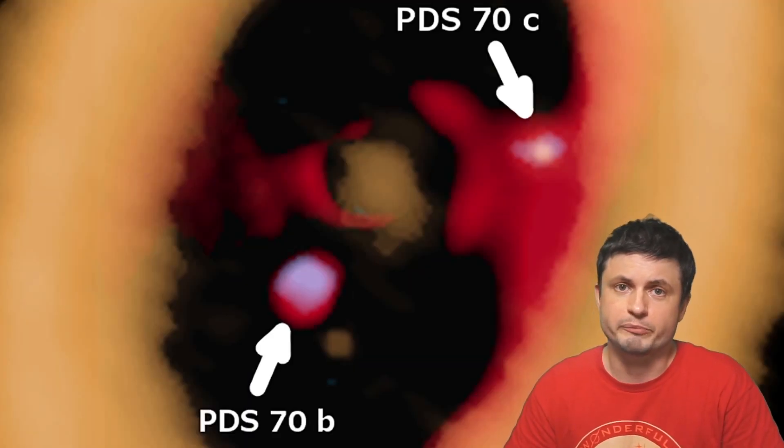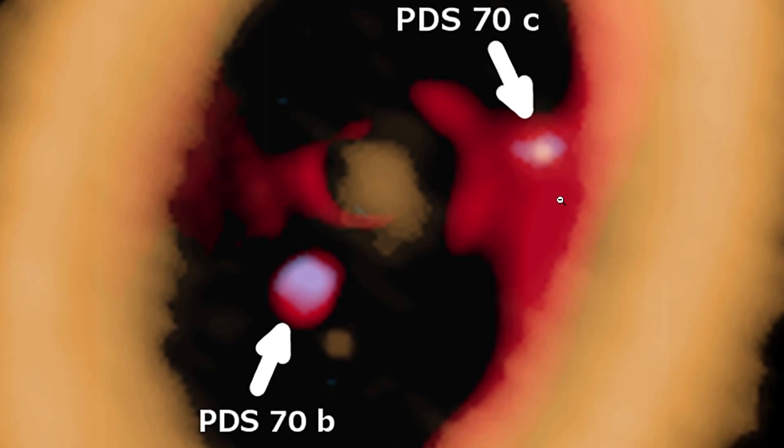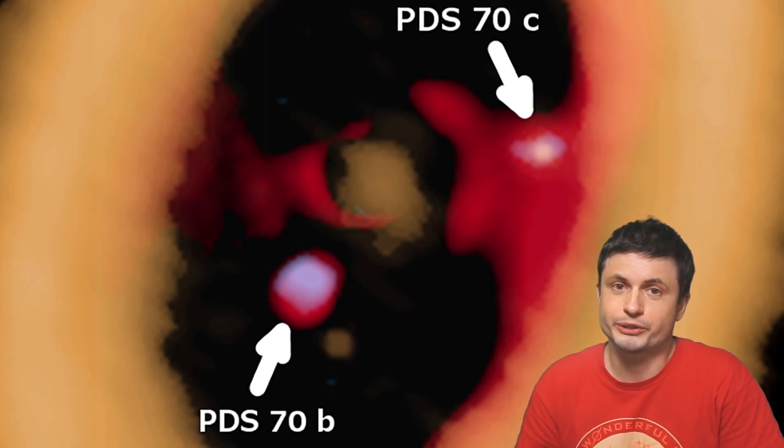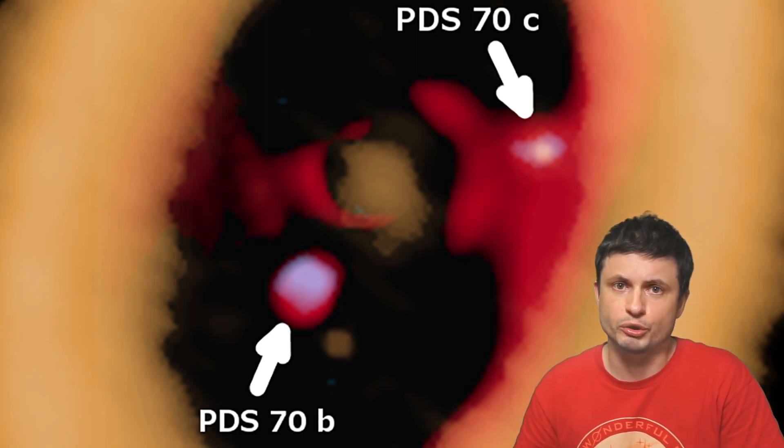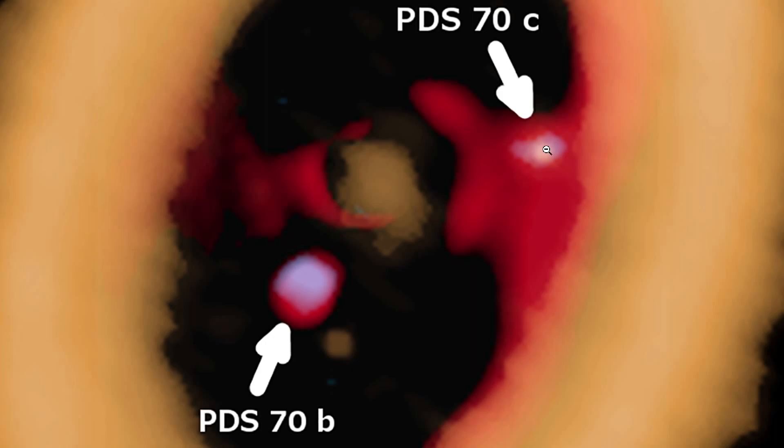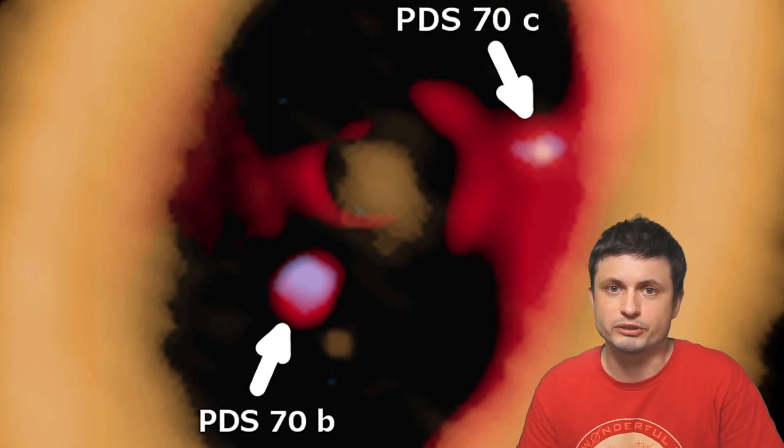But ever since the observations in 2019, it's really these particular patches around the planets that made scientists really intrigued and super curious about what was actually happening. Were these actual moons being formed? Or was this something else entirely that we don't understand just yet? For example, some scientists suggested that maybe this is how the planet is absorbing mass from the disk and becoming larger and more massive. So what exactly was happening? New observations were needed.